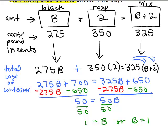Now what did B stand for? Look at our picture. B stands for how many blackberries in the container. That's what the original problem asked us. How many blackberries should we use? And we're trying to find that out. So we're going to use 1 pound of blackberries.